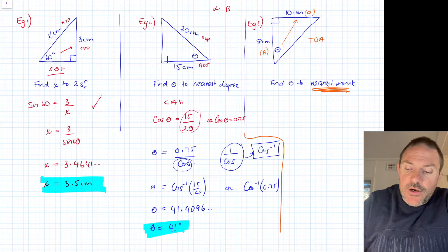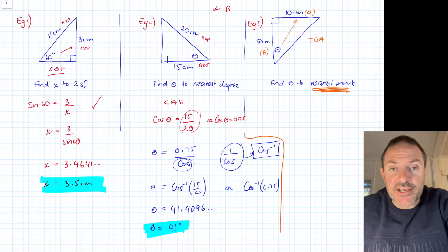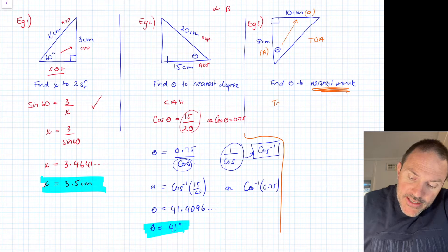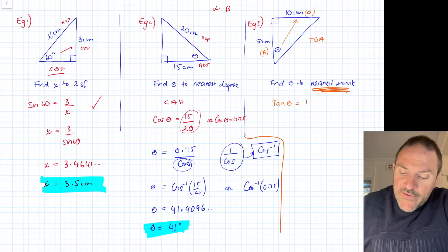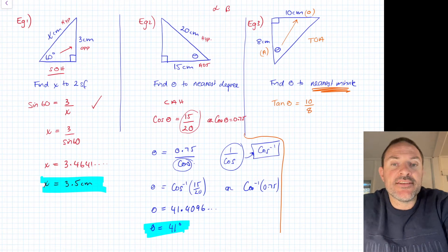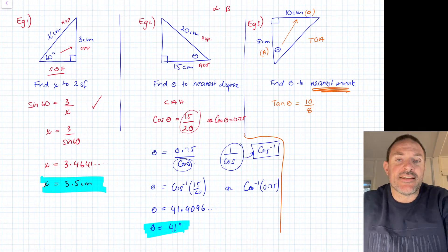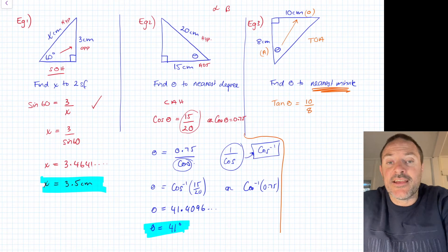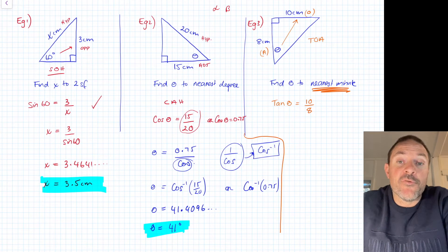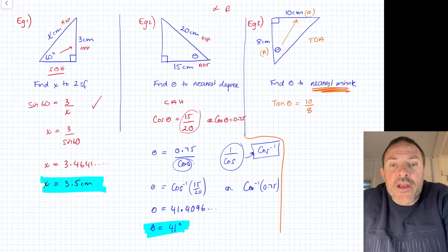Once I've done that, I can say I'm using TOA, my tan rule. Opposite and adjacent is TOA. I'm going to write tan theta. I don't have an angle there, so I'm going to put my theta. We have my opposite and my adjacent, 10 over 8. If you want to put that as a decimal, go for it. If you want to put that as a simplified fraction, 5 over 4, go for it. There's no real benefit in my view.